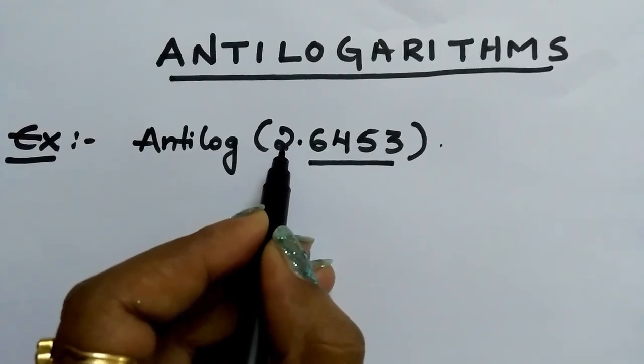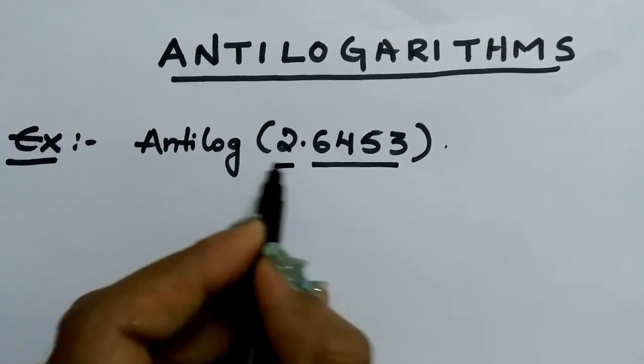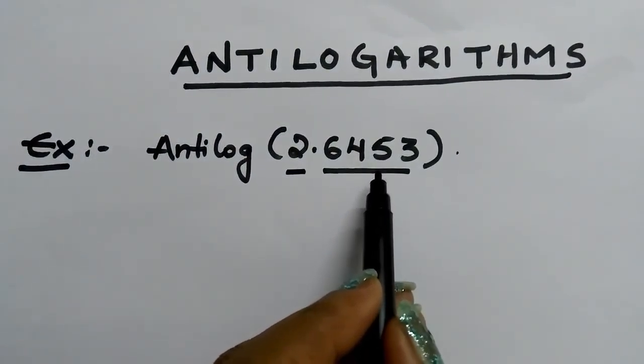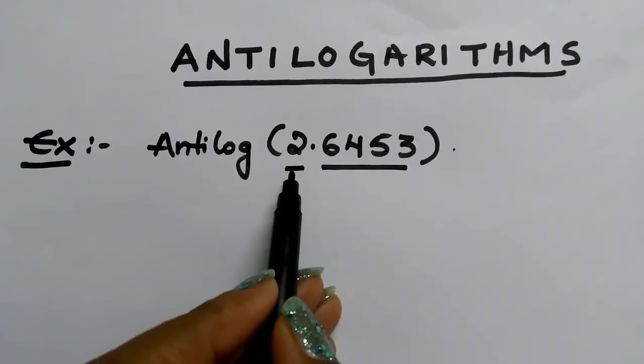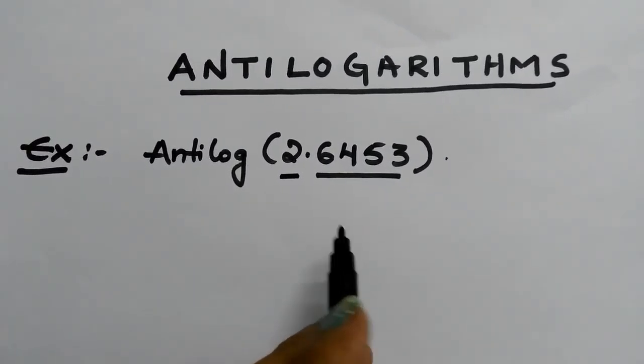Before the point, this is called the characteristic. This integer is called the characteristic. Mantissa is useful to see the value. Characteristic is useful to place the decimal. Let us see this example.